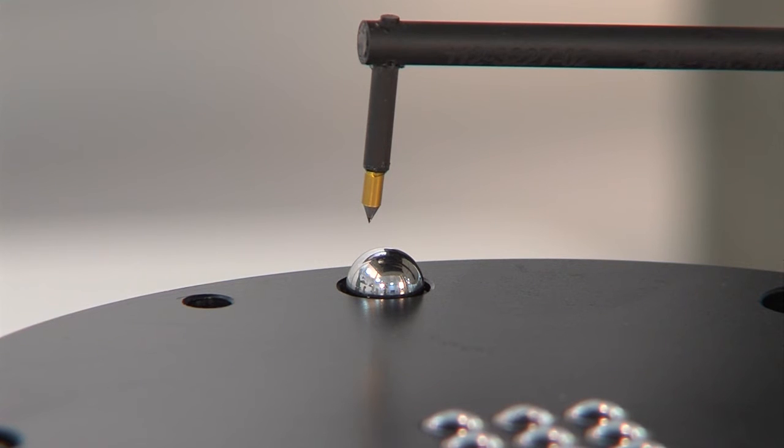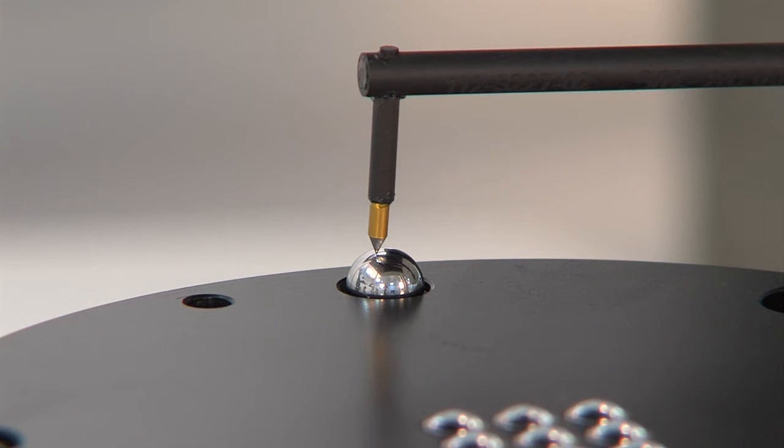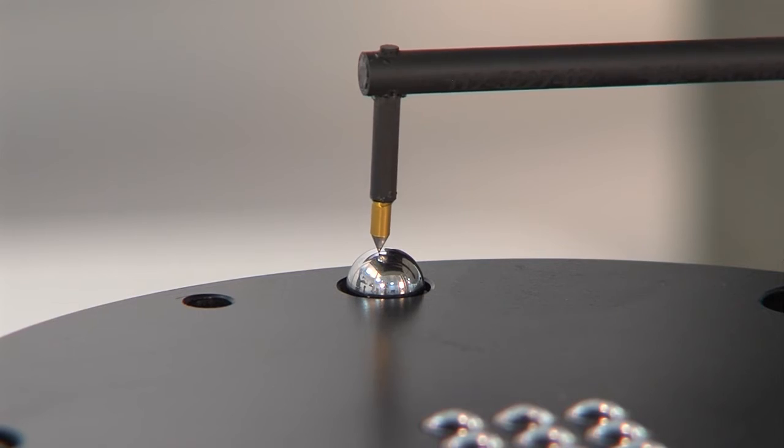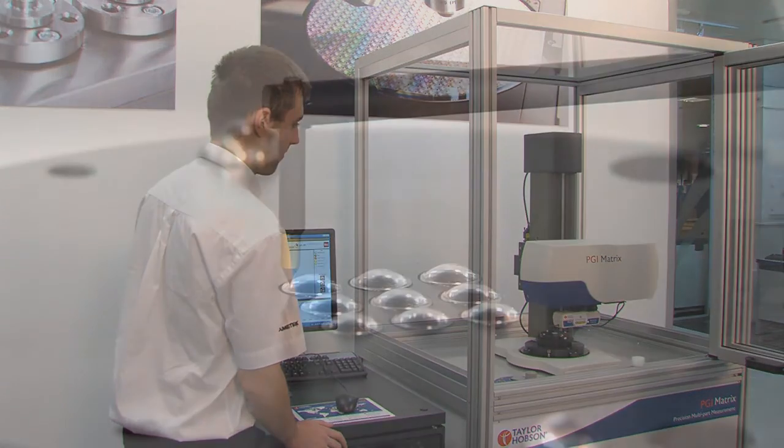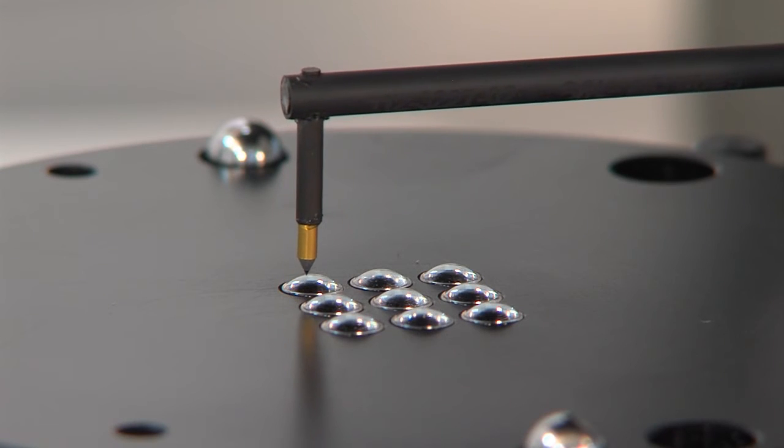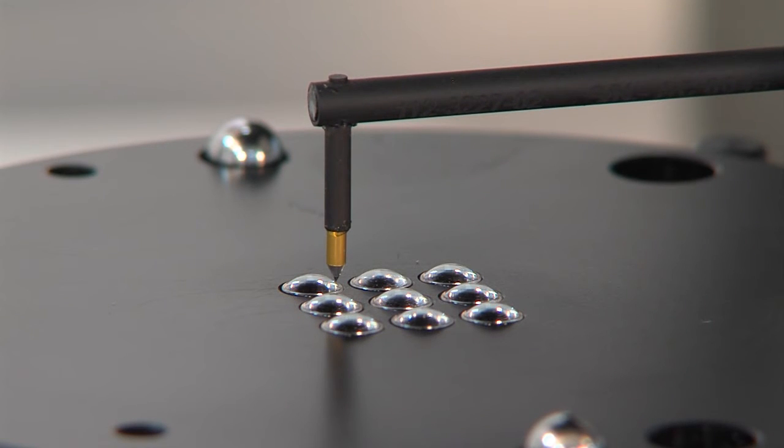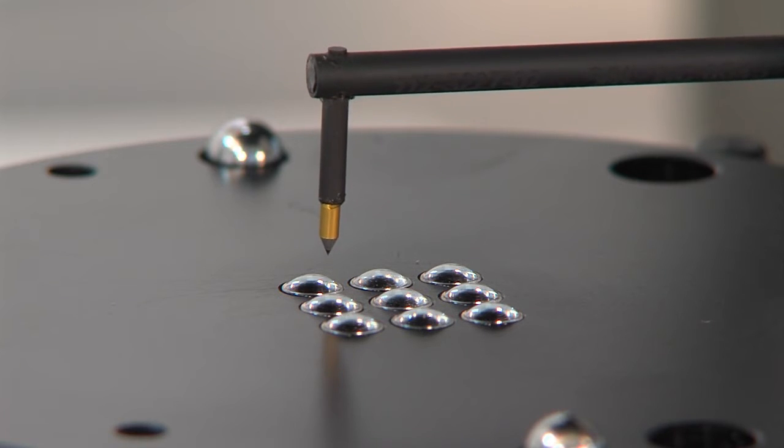The PGI Matrix first performs cresting alignment checks. The measurement cycle is fully automated, ideal for use on any busy shop floor.